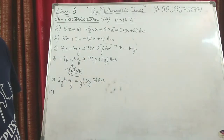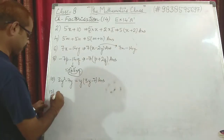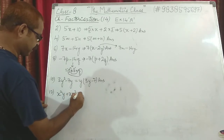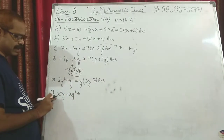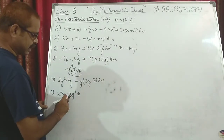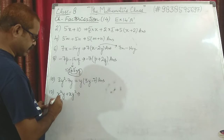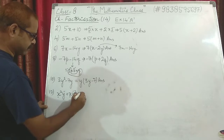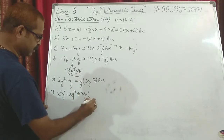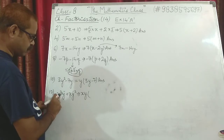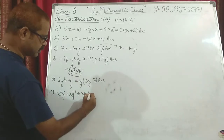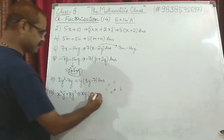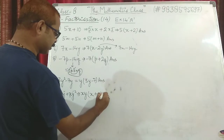Question 12: x²y + xy². x²y means x·x·y and xy² means x·y·y. From both terms we can take 1x common and 1y common, so xy is common. What is left? From the first term, x is left; from the second term, y is left. Answer: xy(x + y).